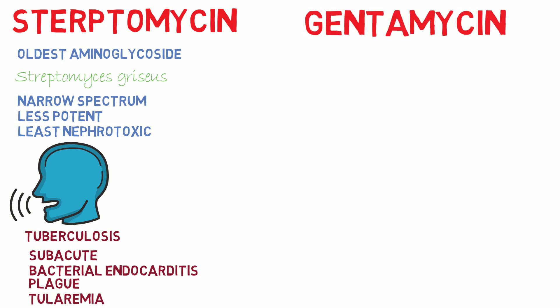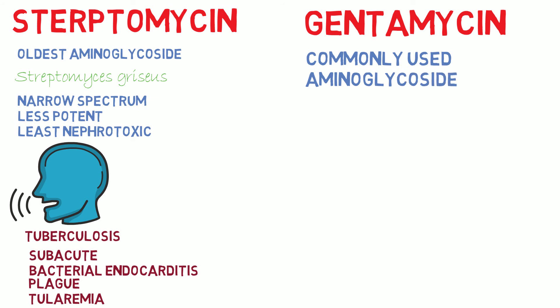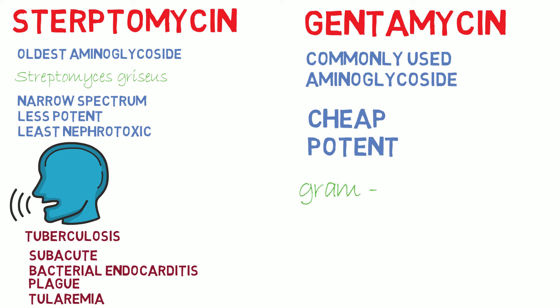Gentamicin is one of the most commonly used aminoglycosides since it is cheap and more potent. It has a broader spectrum of action covering gram-negative rods and gram-positive cocci.